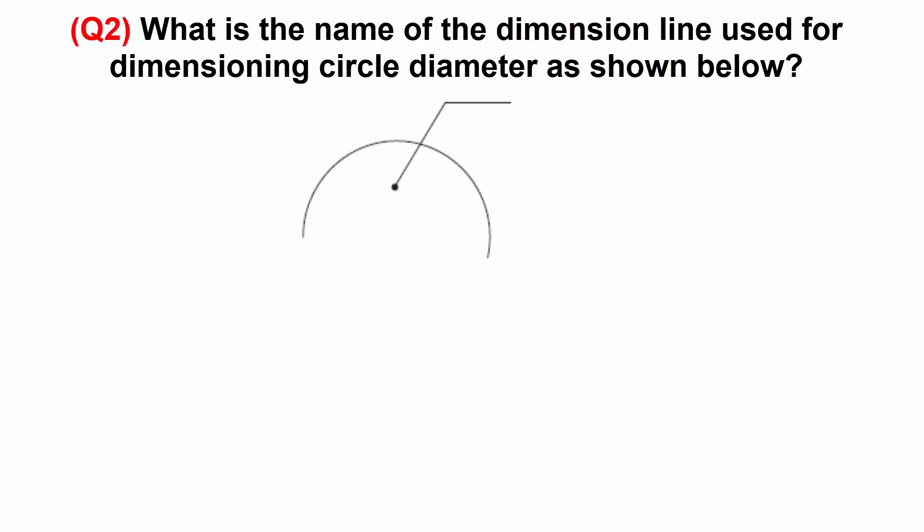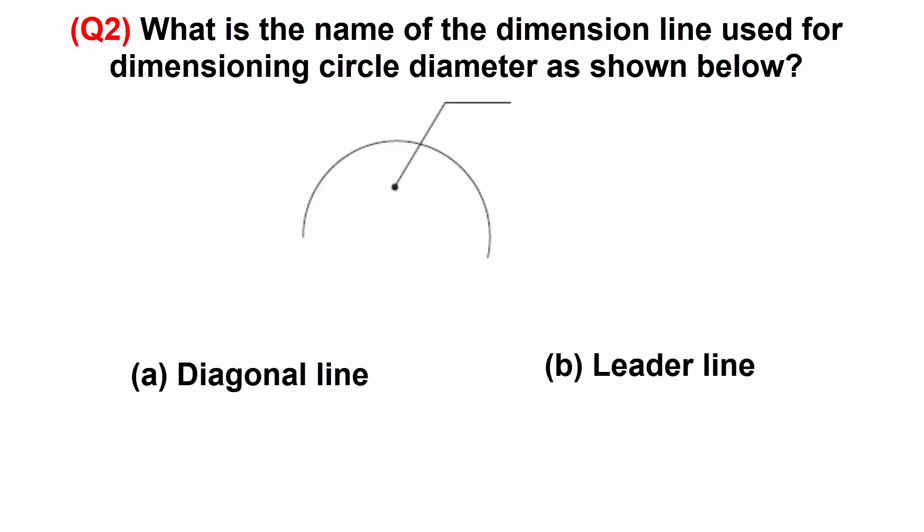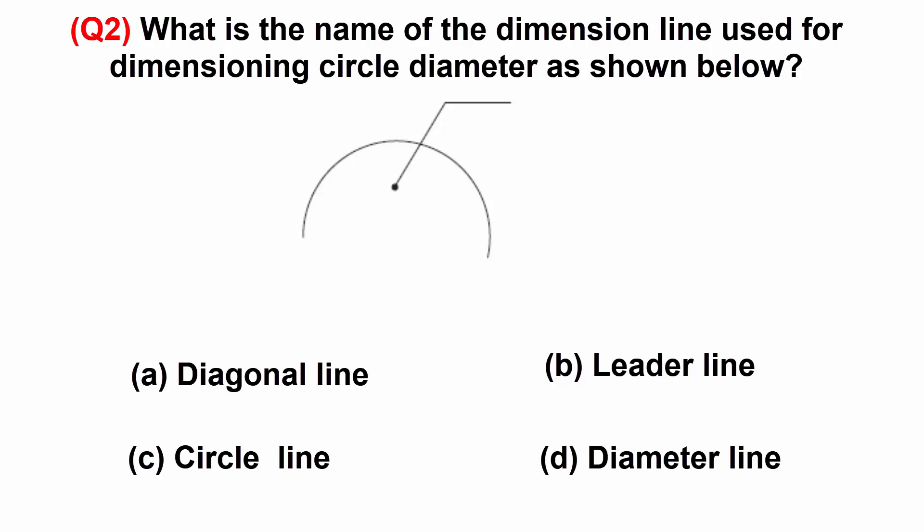What is the name of the dimension line used for dimensioning circle diameter as shown below? A: diagonal line. B: leader line. C: circle line. Or D: diameter line.